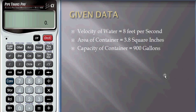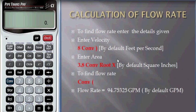Now let's see the given data. Velocity of water is 8 feet per second, area of the pipe is 3.8 square inches, and the capacity of the container is 900 gallons.